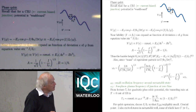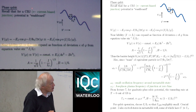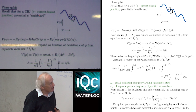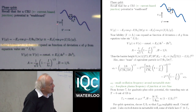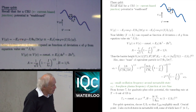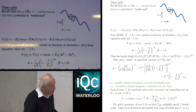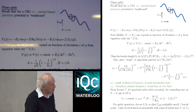You remember that for a current-biased junction — a simple Josephson junction subjected to a fixed external current — we had the famous so-called washboard potential, which is explicitly given by an expression involving the Josephson coupling energy across the junction and an effective term due to the external current. You can rewrite this in a standard form.